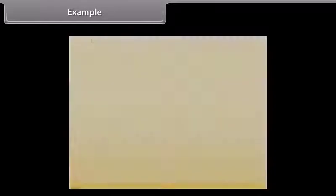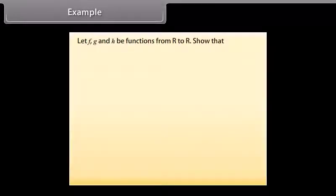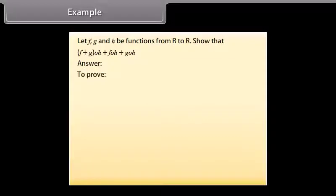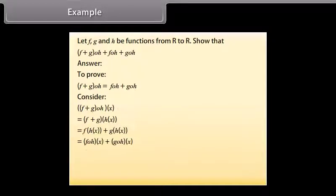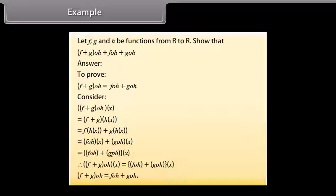Example. Let f, g and h be functions from R to R. Show that (f + g)∘h = f∘h + g∘h. Answer. To prove: (f + g)∘h = f∘h + g∘h. Consider (f + g)∘h(x) = (f + g)(h(x)). On solving, we get (f + g)∘h = f∘h + g∘h. Hence proved.